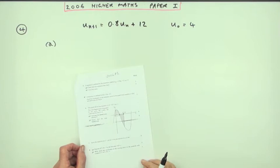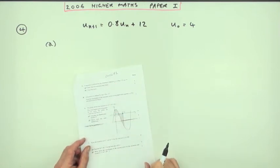Number four from the 2006 Higher Maths Paper 1, a little recurrence relation question, only three marks.